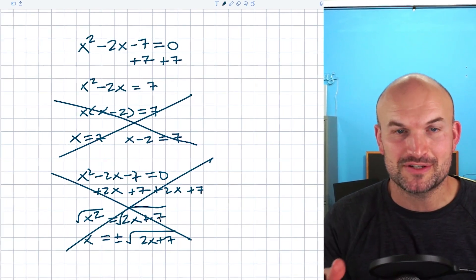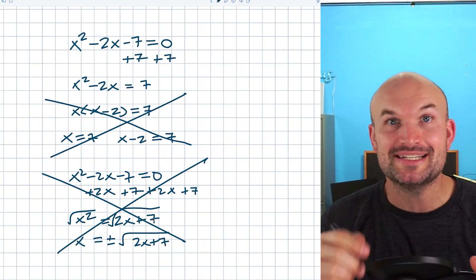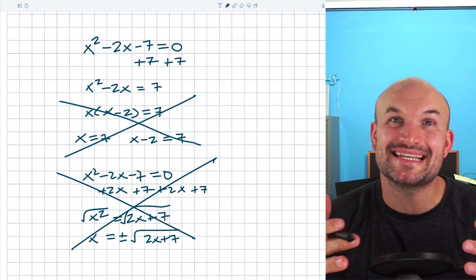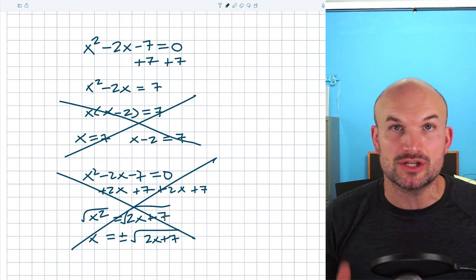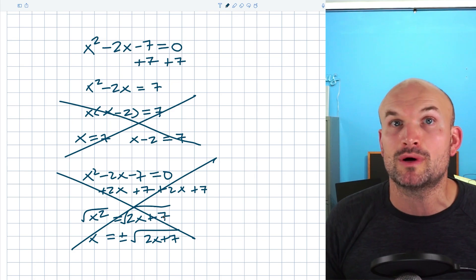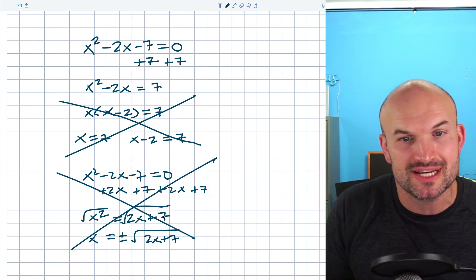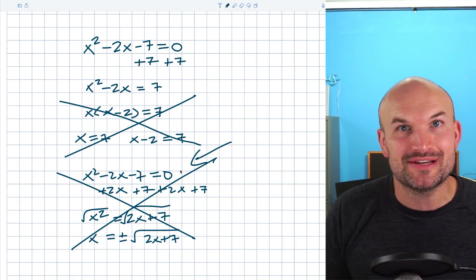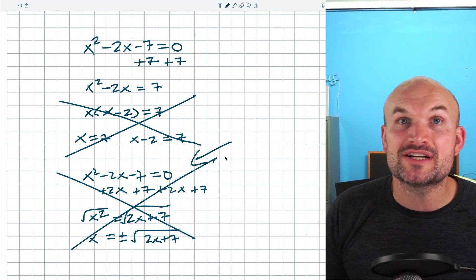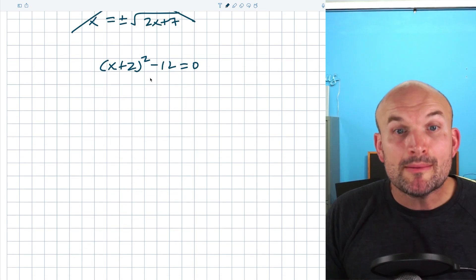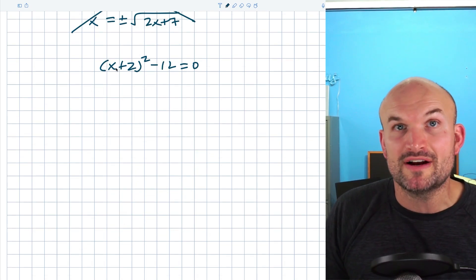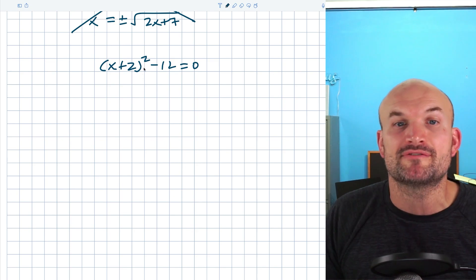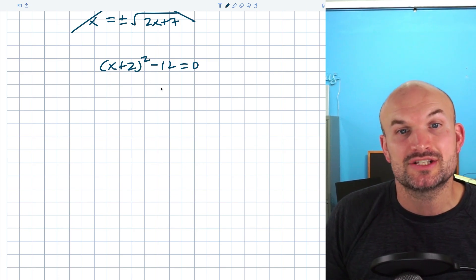So when factoring fails us and we don't want to make those two mistakes, what can we do? In my last video, we talked about the easiest way to solve quadratics — using inverse operations, but only when we have one variable term. That problem was simple because we only had one variable, so we could simply apply inverse operations to solve.